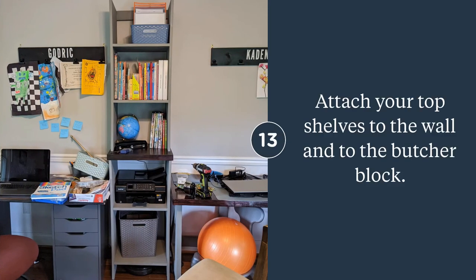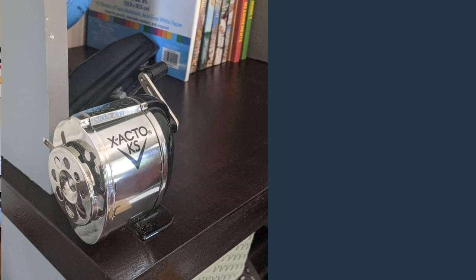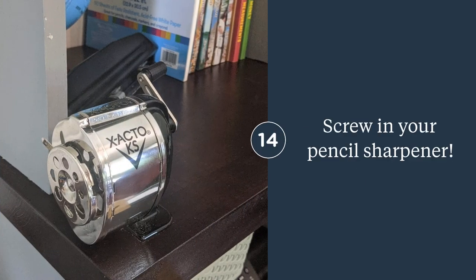And here's the cabinet put in before we added additional shelves on top and on either side for our area. I screwed in our pencil sharpener, which works pretty well. I actually strongly prefer this to some of the other pencil sharpeners we've used. It's nice and stable with it screwed into the butcher block, and it does create a little bit of a mess, but we just clean that up as needed.